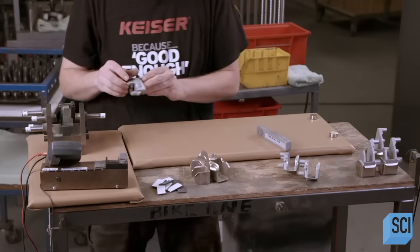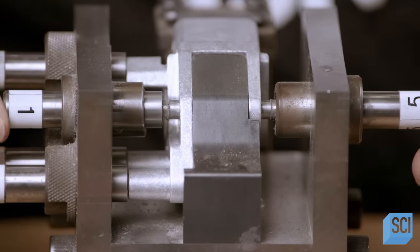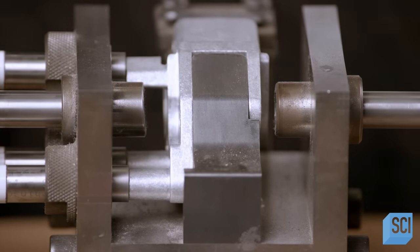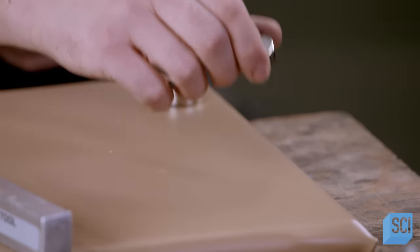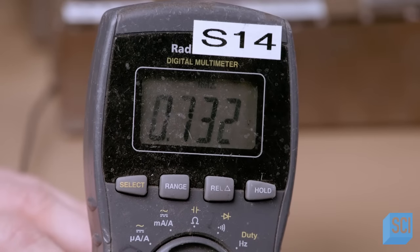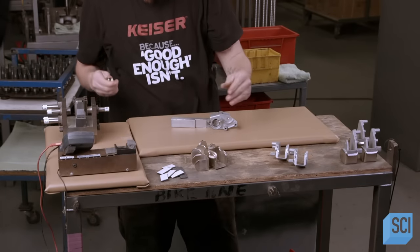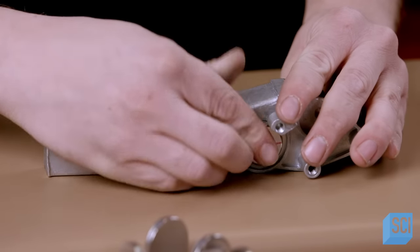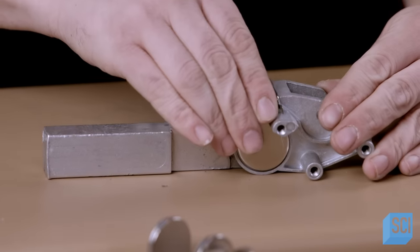Next up are the holders for the magnets that create resistance on the flywheel. A worker places each one in a fixture to inspect the dimensions. He then checks the strength of the magnets in a tester. Satisfied, he inserts two in each holder. This metal cage pulled into position by the magnets completes the magnetic field.